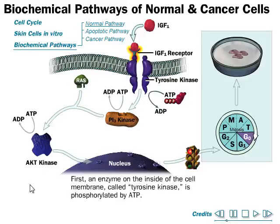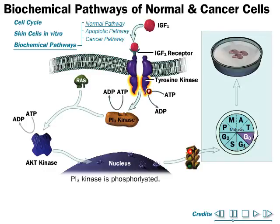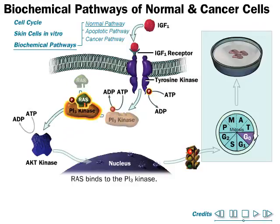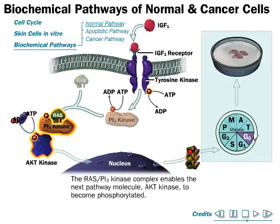First, an enzyme on the inside of the cell membrane called tyrosine kinase is phosphorylated by ATP. This tyrosine kinase further phosphorylates PI3 kinase, activating it. After phosphorylation of PI3 kinase, it is ready to interact with another set of proteins, and Ras protein binds with the phosphorylated PI3 kinase — Ras can only attach to the phosphorylated form.